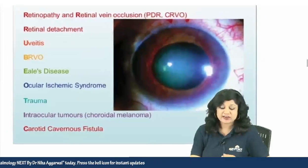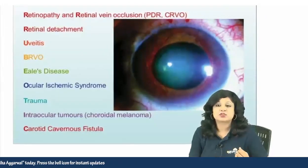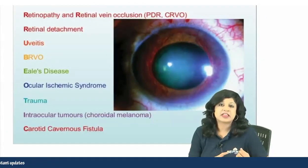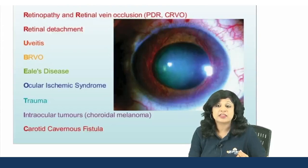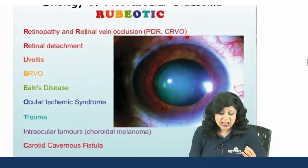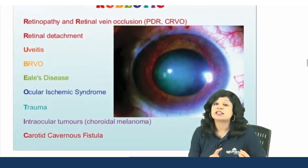R stands for retinopathy. Under retinopathy, we can have CRVO and PDR. R also stands for retinal detachment.